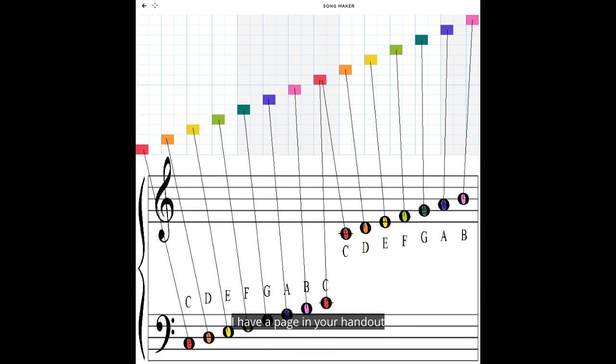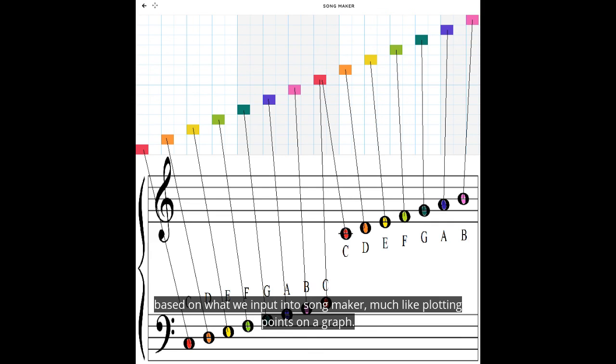I have a page in your handout that you can use as a reference. So basically what we want to do at this point is to put dots on the staff based on what we input into Song Maker, much like plotting points on a graph.